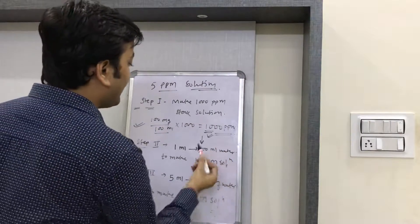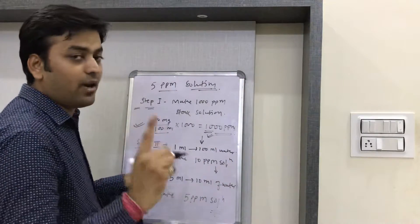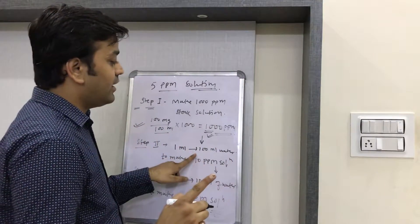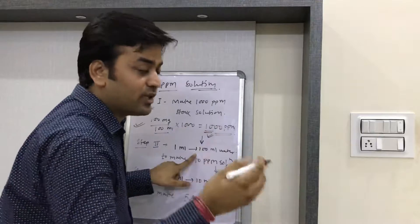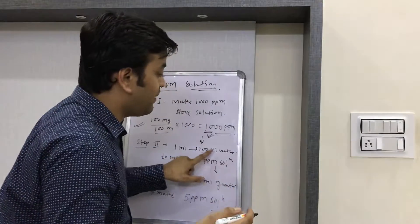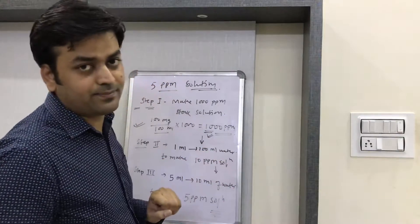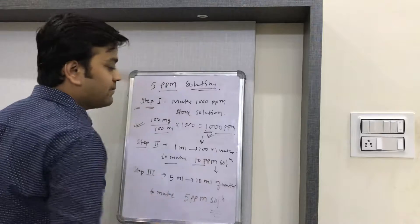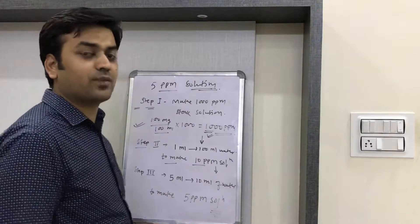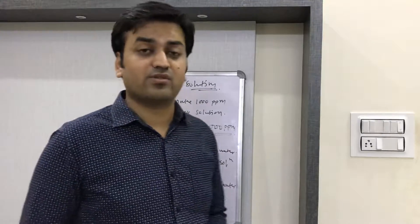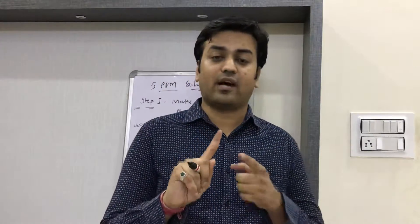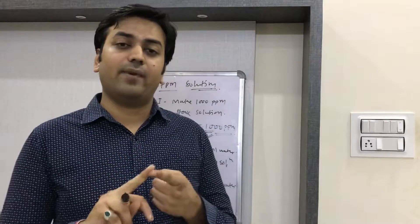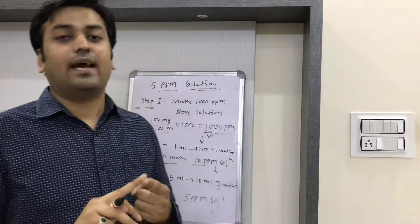The second step is: from this 1000 ppm stock solution, we will take 1 ml of solution and add it to 100 ml of water to make a 10 ppm solution.